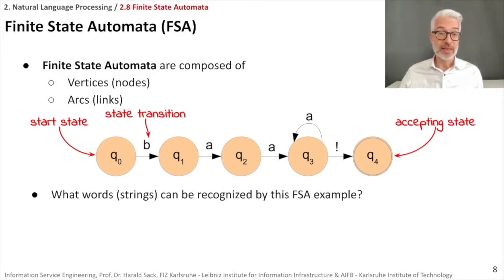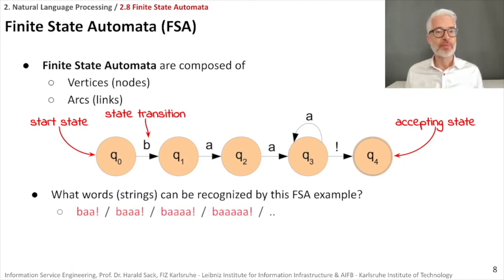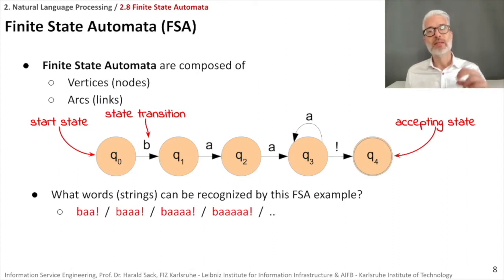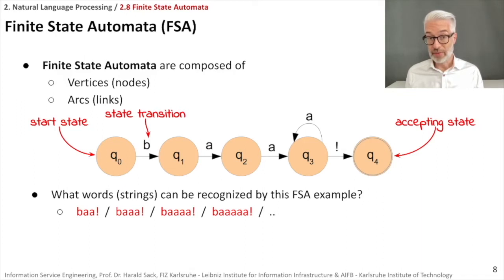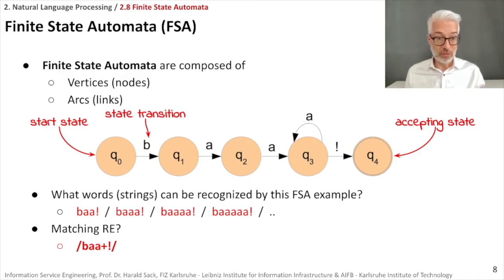What kind of words or strings could be recognized by this finite state automaton? Clearly 'baa!' — and since in q3 we can go back to q3 when the letter 'a' occurs in the input — also 'baaa!', 'baaaa!', or 'baaaaa!'. We can easily write this with a regular expression: b a a+ followed by the exclamation mark — where '+' means one up to n repetitions. You can see a clear correspondence between a regular expression and a specific finite state automaton.